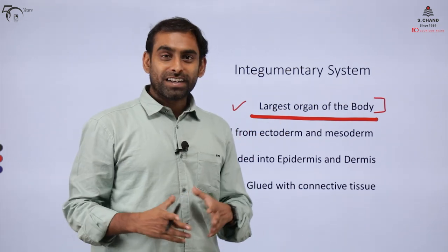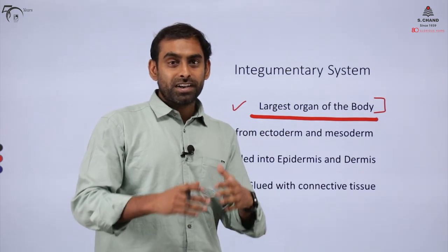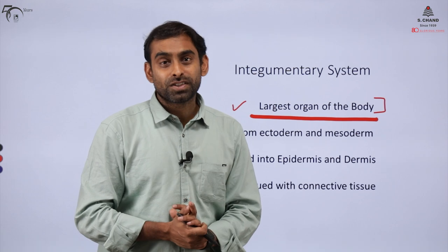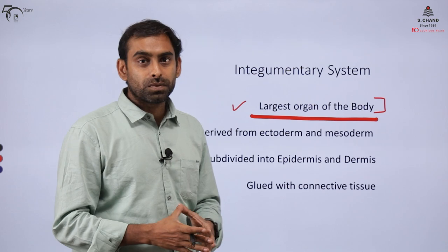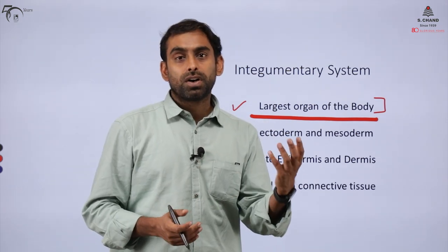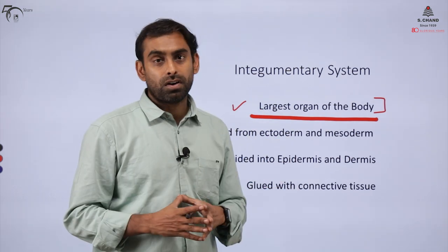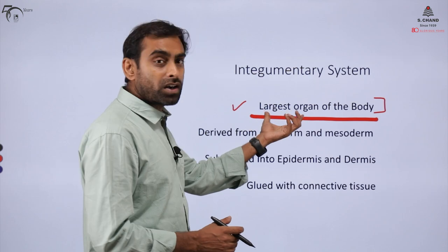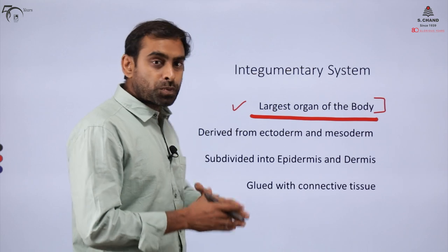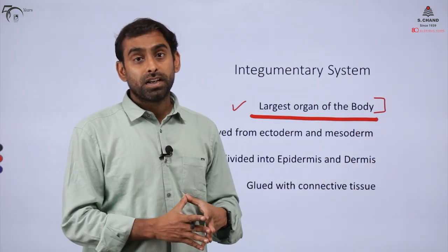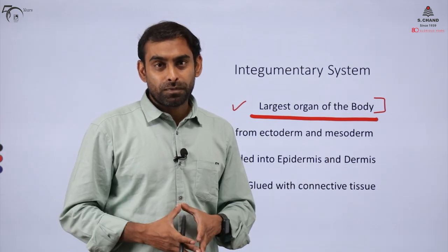Some of you might not believe that skin is also an organ. Whenever somebody asks what the largest organ of the body is, we generally ignore skin. But skin, like other organs, works in a highly coordinated manner and is also a collection of different types of tissues, which gives it the attribution of an organ. It can span many square meters — in fact, if we spread all the epithelium, it can cover almost the entire field of a football.